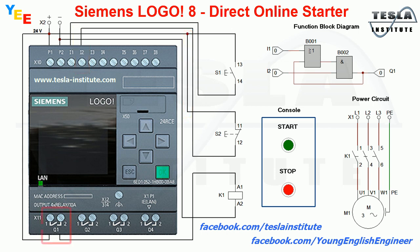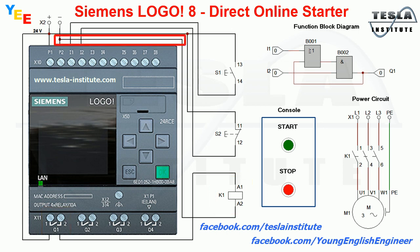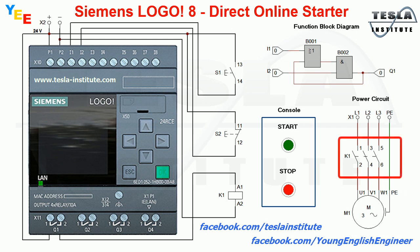To digital output Q1 is connected the coil of contactor K1. Terminal A2 of the coil is connected to the minus terminal of the 24 volt supply. In the power circuit we have motor M1, main contactor K1, and terminal block X1.